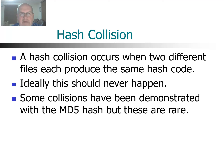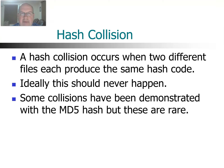A collision is when you have two different files that produce the same hash code. In theory that should never happen, but because you're condensing a very large file into just a character string, it is possible. The MD5 has demonstrated this a number of times — it's not common, but it can occur. That's why MD5 is becoming less popular and the SHA hash algorithms are becoming more popular, as they seem less susceptible to these collisions.